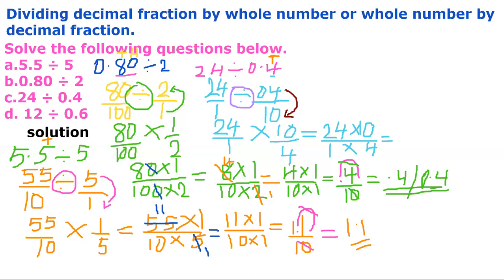Cancel: 4 goes into 24 six times, giving 6 times 10 over 1 times 1, which is 60 over 1, the same as 60. The answer is 60.